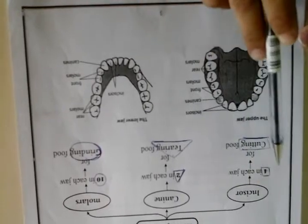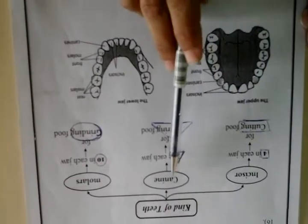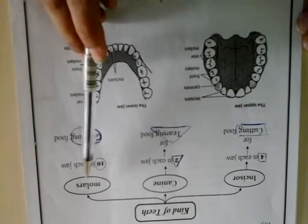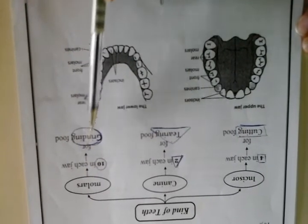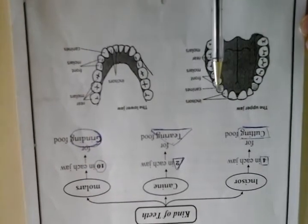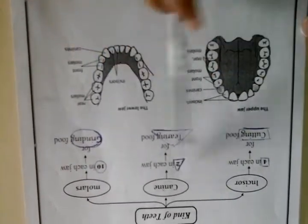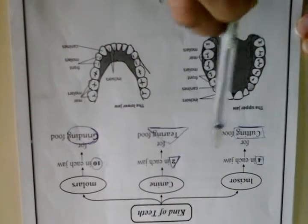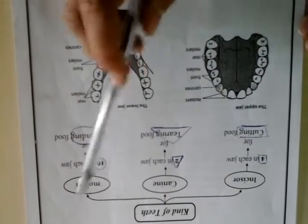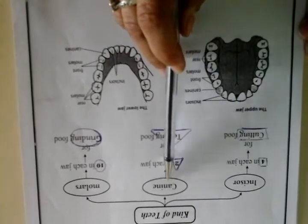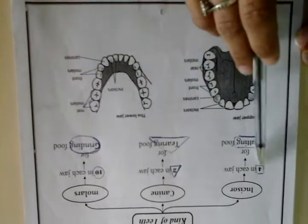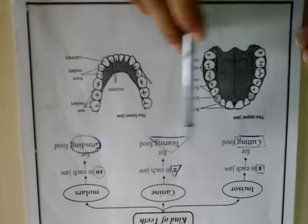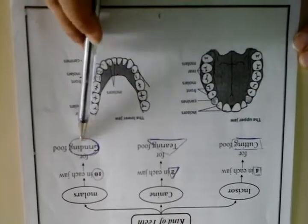To summarize: incisors — four for cutting; canine — two for tearing; molars — ten for grinding. That's the three kinds of teeth. Four, two, ten — cutting, tearing, grinding.